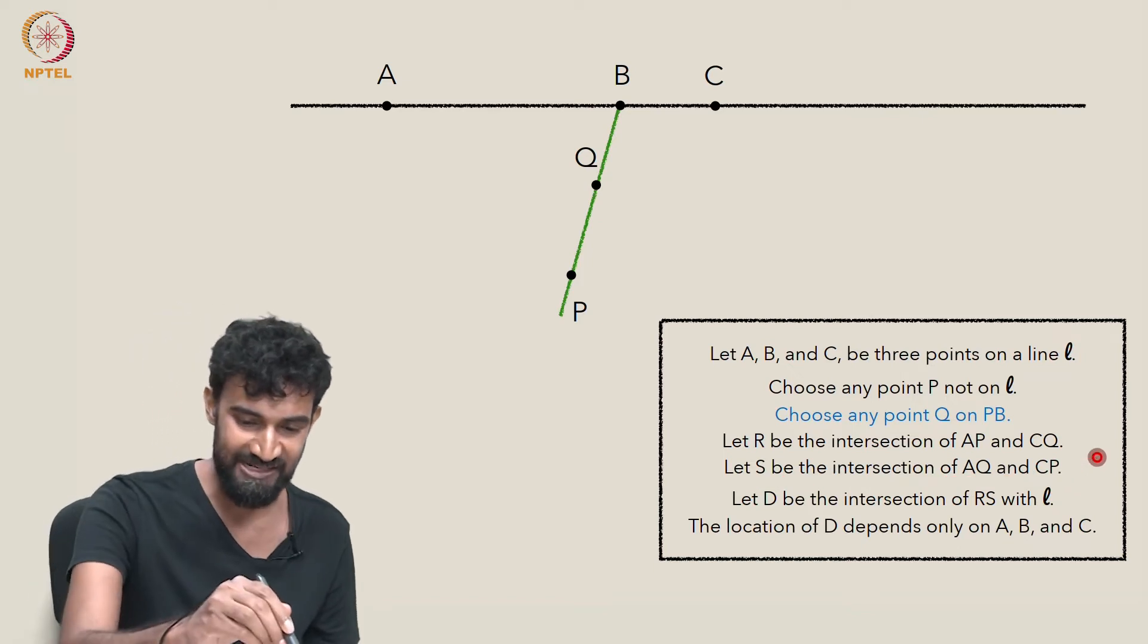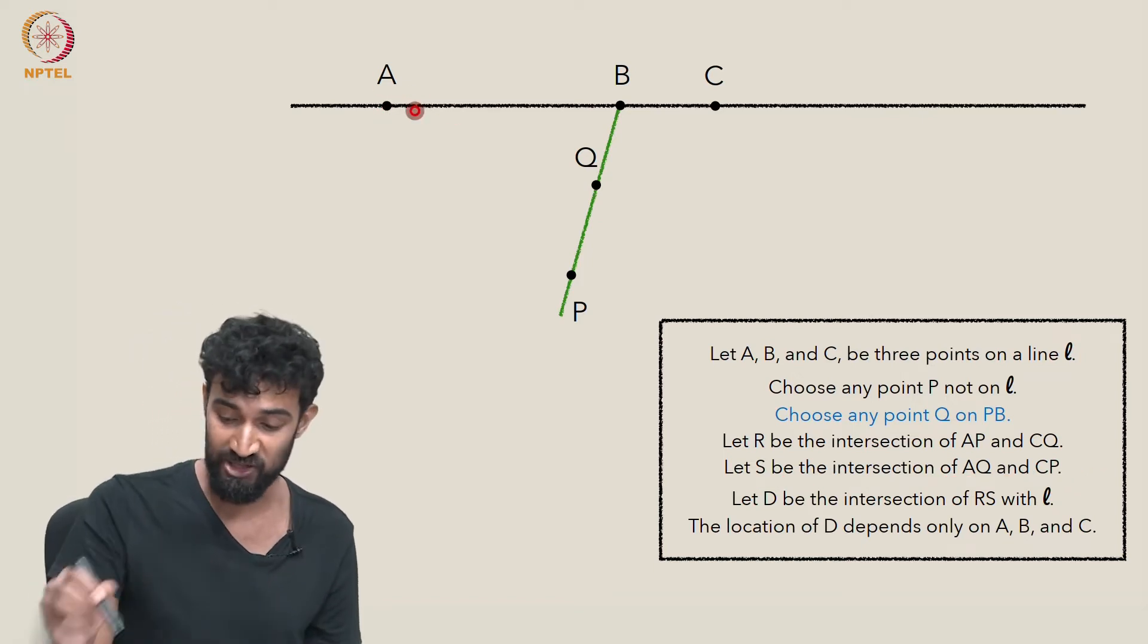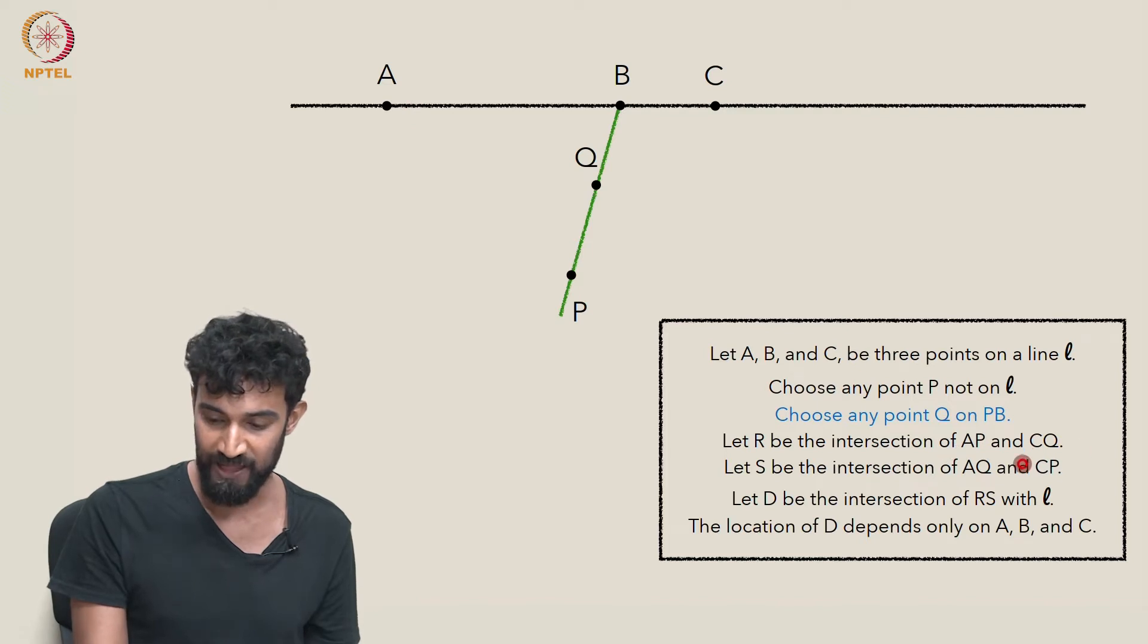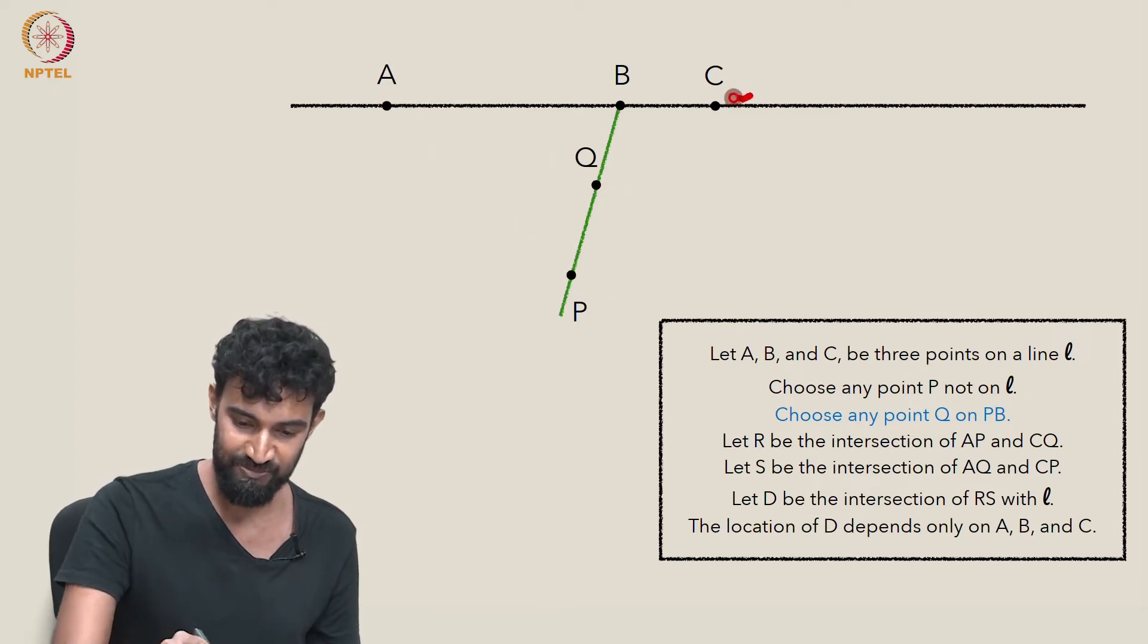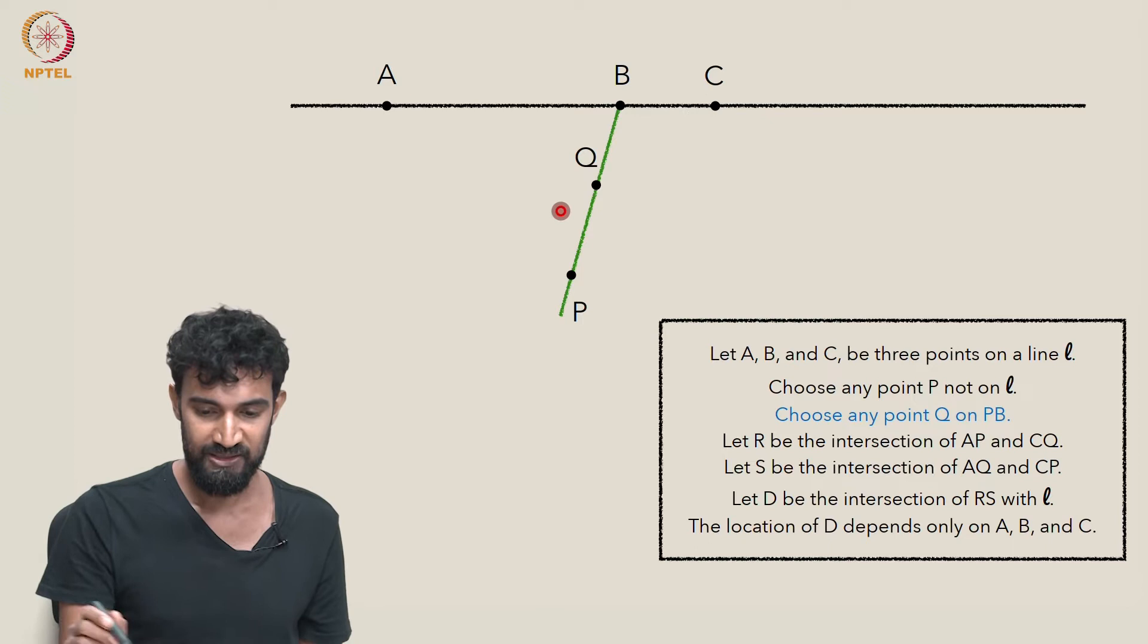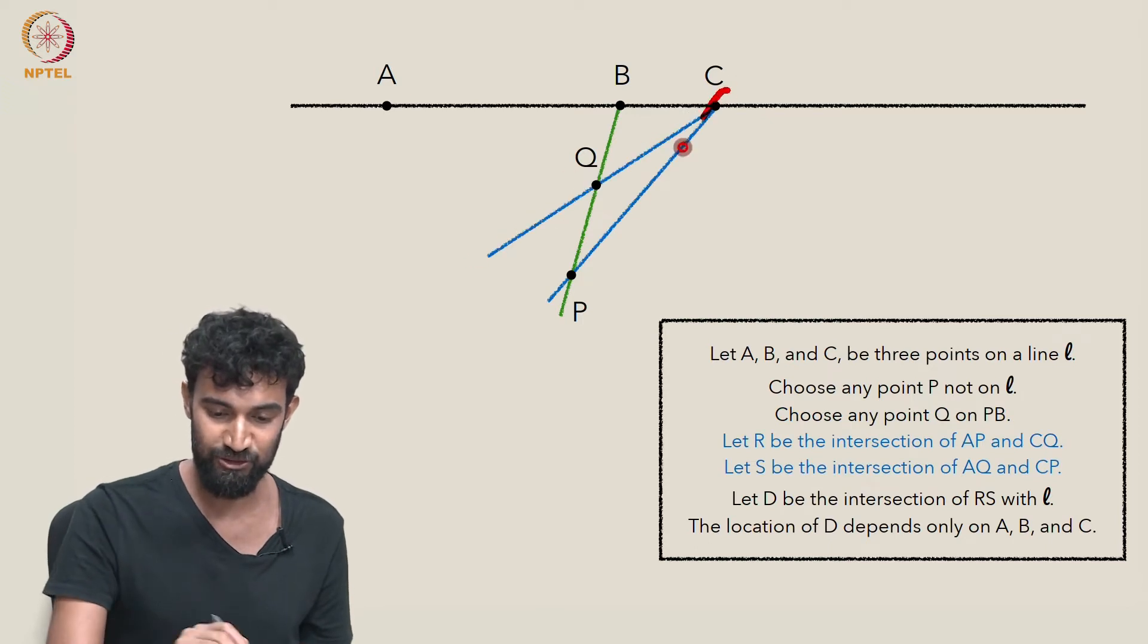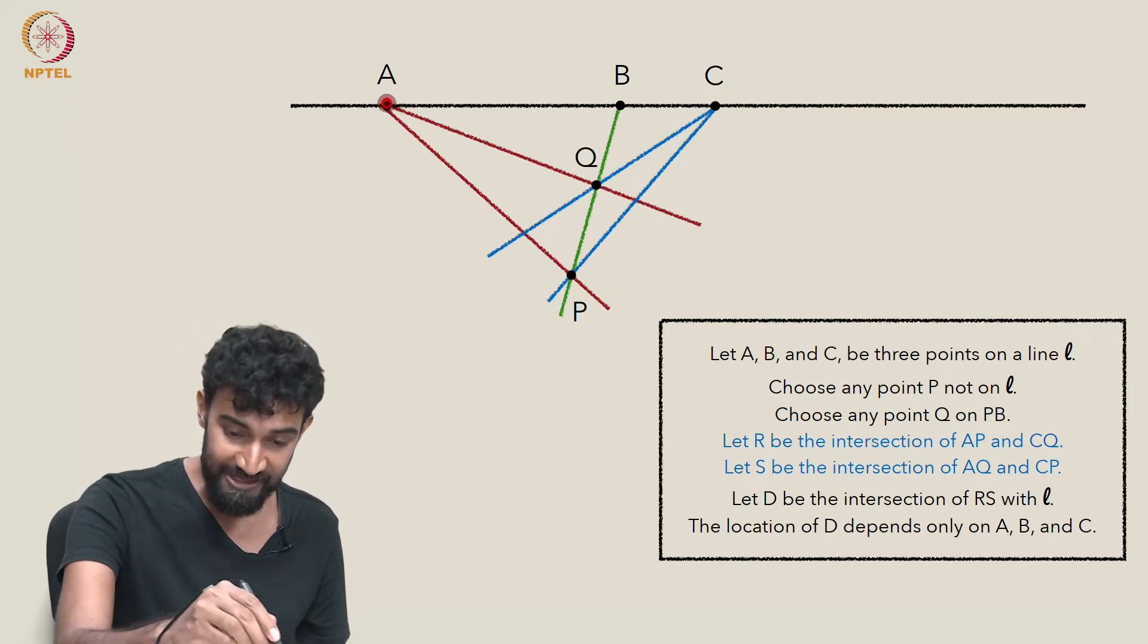It'll be a little easier if we draw these lines AP, AQ, CQ, and CP. Basically we want to connect A to P, A to Q, C to P, and C to Q. So we'll connect up C to P and Q first. Then we'll connect up A to P and Q.